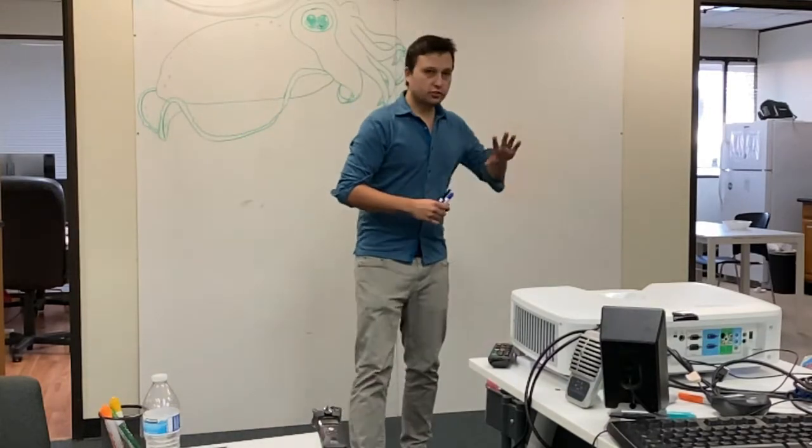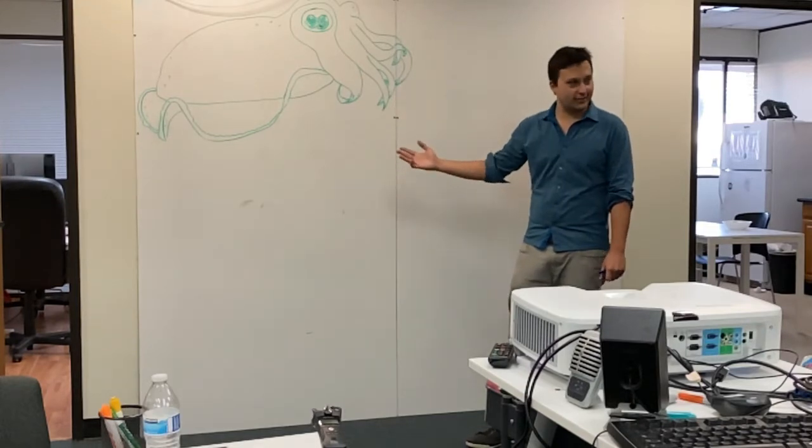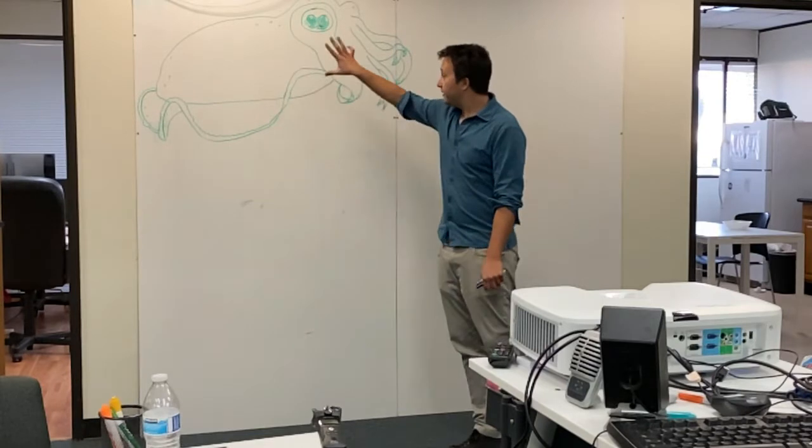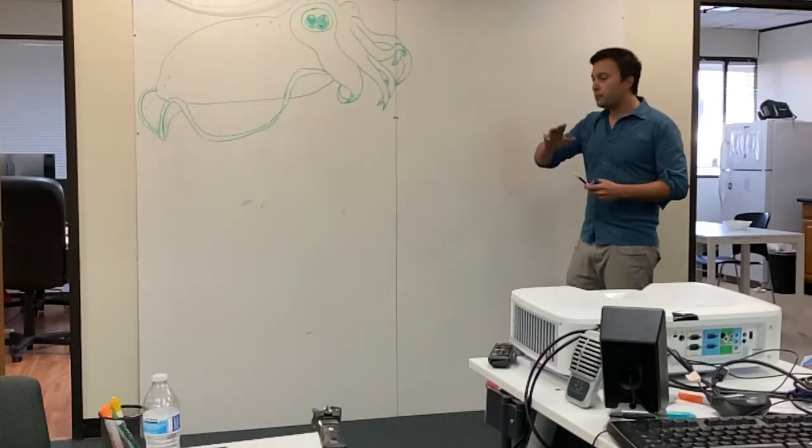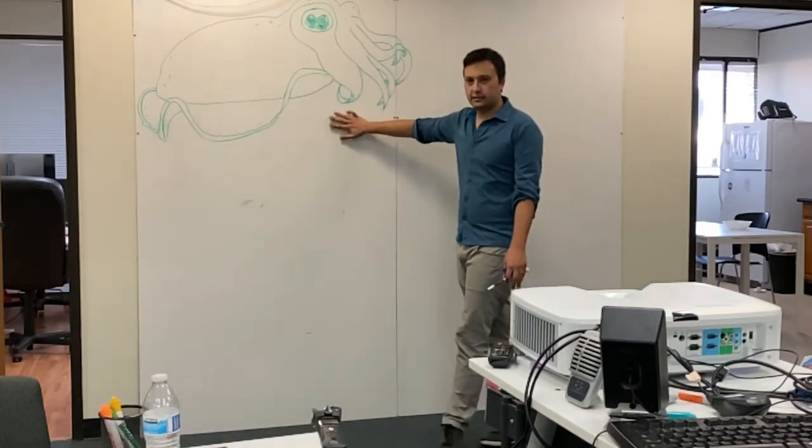So we're first going to start off with our cuttlefish. I did not draw this. Many of you know my lovely drawing and handwriting skills. This is not me. This is Sequoia. So this is our guy, right? Also in the tank. One of the big projects that we're working on is learning all about what makes this guy tick.